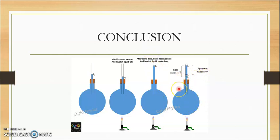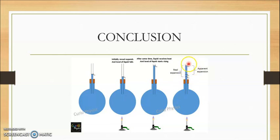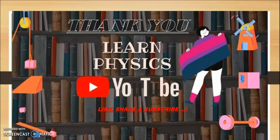So to distinguish: real expansion is from L2 to L3. For apparent expansion, we ignore the container expansion, so we compare the initial level L1 directly to the final level L3 — that is the apparent expansion. That covers everything about thermal expansion of liquids. Hope it was clear. Please like, subscribe, and share. Thank you.